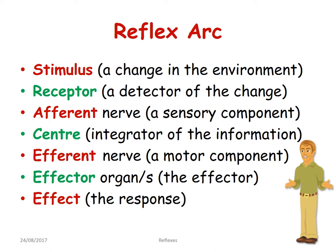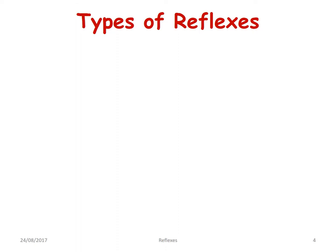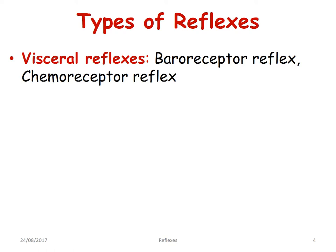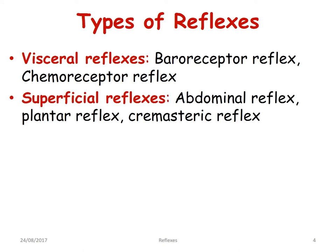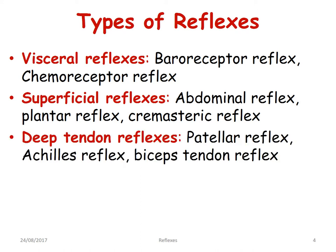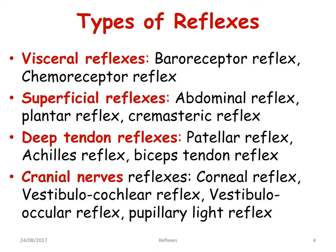Let us look at the types of reflexes. You have the visceral reflexes — for example, baroreceptor reflex and chemoreceptor reflex. Superficial reflexes: abdominal reflex, plantar reflex, cremasteric reflex. Deep tendon reflexes like the patellar reflex, the Achilles reflex, and biceps tendon reflex. Then we have the cranial nerve reflexes: corneal reflex, vestibulocochlear reflex, vestibulo-ocular reflex, pupillary light reflex, and so on. This classification is based on from where these reflexes are going to be elicited.